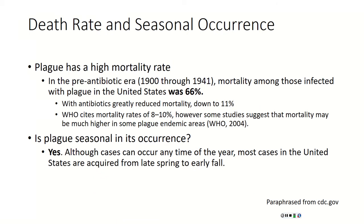Now let's talk about the death rate and seasonal occurrence of plague. With SARS-CoV-2 and COVID-19, we think the mortality rate is around 1% — maybe 2%, maybe lower — we just don't have enough information yet. But here's what we know about plague. Before antibiotics — up until 1941 — the mortality rate was 66%: 2 out of 3 people would die. With antibiotics, the mortality rate has been reduced to about 11%, or 8 to 10% according to the WHO. But in endemic areas and developing nations where antibiotics are unavailable, the mortality rate could be much higher. Seasonally, plague usually occurs in the United States from late spring to early fall, when animals are moving, fleas are looking for food, and factors like rainfall come into play.